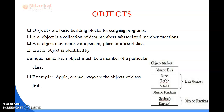An object is an entity that has State and Behavior. For example, a Chair, Paint, Table, Keyboard, Bike, etc. are all objects because an object can be Physical or Logical. An object can be defined as an Instance of a Class. An object contains an address and takes up some space in memory. Objects can communicate without knowing the details of each other's data or code.